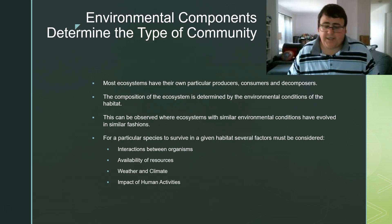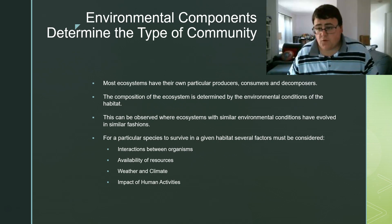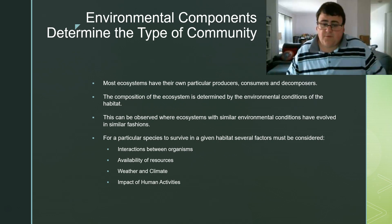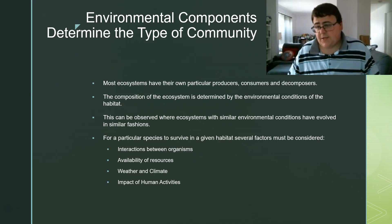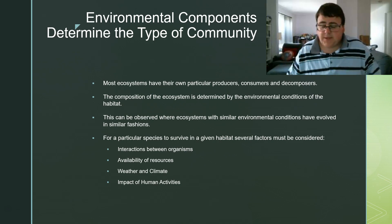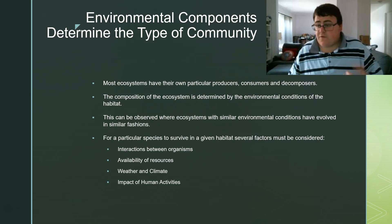The first is the interaction between different organisms — what type of prey is going to be available for it to eat, what kind of predators are going to be hunting it, and whether there are organisms that provide commensalism or mutualism. The availability of resources covers water, food, shelter, etc.